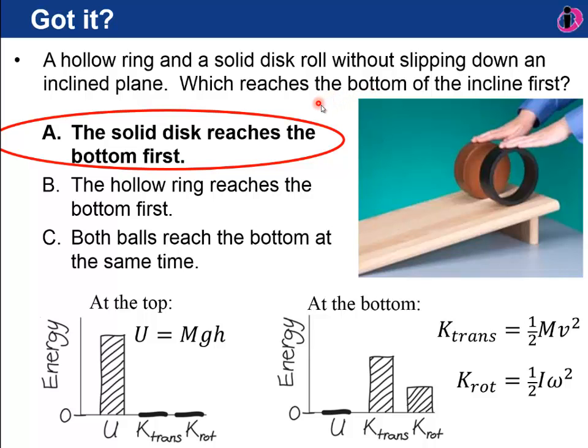So if you do this experiment, the solid disk reaches the bottom first. And the reason for that is this. They both start with some potential energy, and then they both have to share that energy between the translational and the rotational. The rotational is one-half I omega squared.